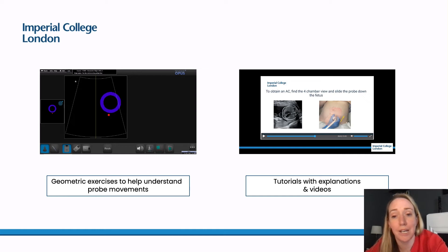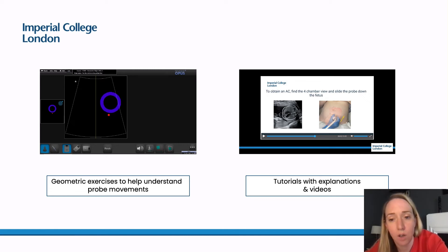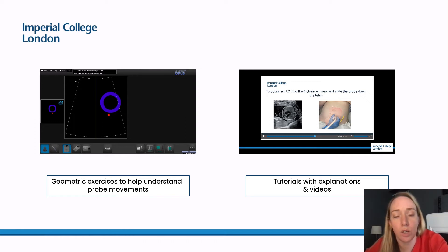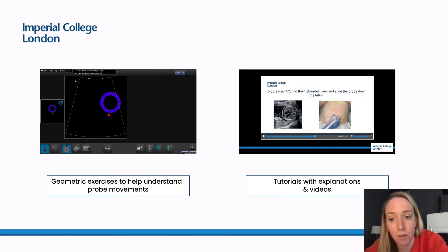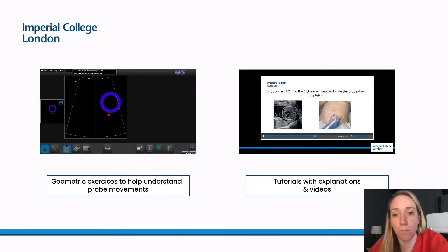Each module also contains video tutorials going through the theory and explaining how to obtain the target image. It's a real-time video with the probe moving on the maternal abdomen, a fetus superimposed on the maternal abdomen, and the scan image simultaneously. Trainees can see how the probe moves on the abdomen, how those movements relate to changes in the ultrasound image, and how the probe is moving in relation to the baby in the abdomen.